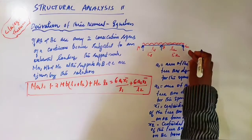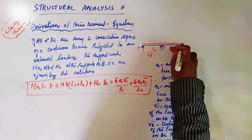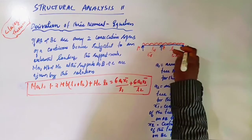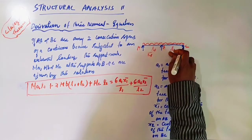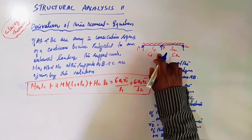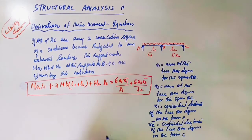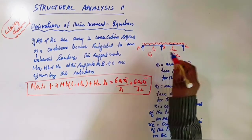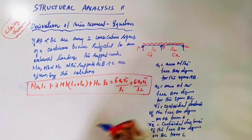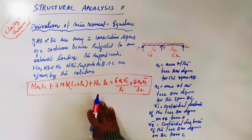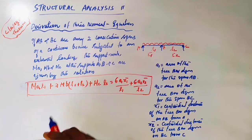X2 bar distance is measured from C for span BC. So the variables are: A1, A2 — areas of free bending moment diagrams; X1 bar — centroidal distance from A; X2 bar — centroidal distance from C; L1, L2 — spans; I1, I2 — moments of inertia; MA, MB, MC — support moments.